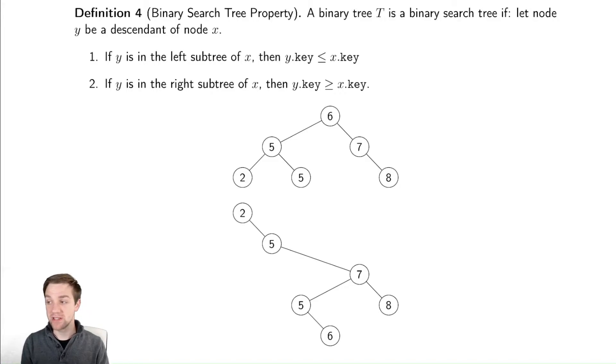A binary tree is a binary search tree if it satisfies two properties. Those two properties are that if something is in the left subtree of a node, then it is less than or equal to that value of that node, and if it is in the right subtree, it is greater than or equal to this. This is effectively that our tree is sorted in the sense that everything to the left of our node is less than it, and everything to the right of our node is greater than it.